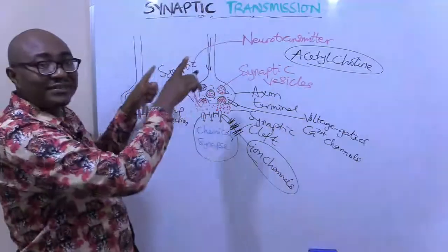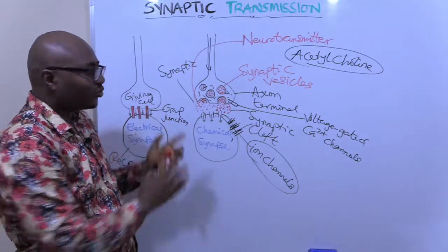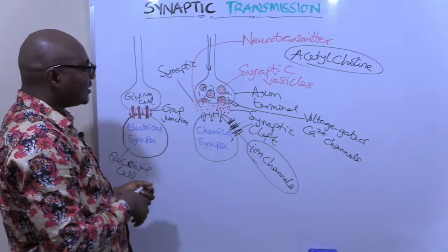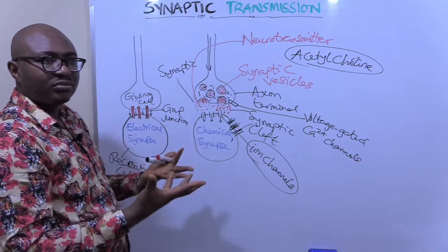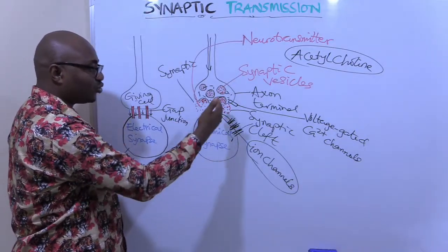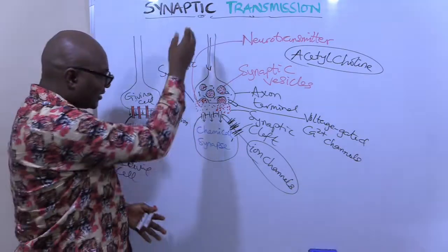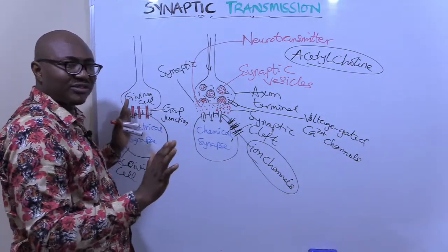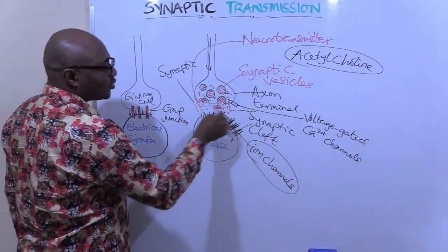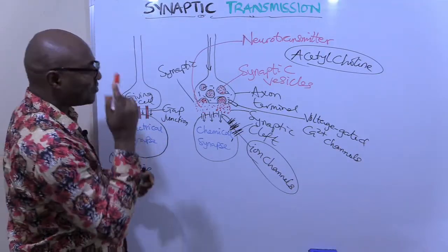So that is the mechanism of synaptic transmission — transmission of electrical impulse from one neuron to another neuron, or from one neuron to a muscle. Now you ask yourself: the neurotransmitter has been released — will it remain there? Because if it remains there, it will continue to generate electrical impulses, which you don't want. Once it does its work, the transmission should stop. So there is a process of clearing the neurotransmitter from this place, and it happens through several means.